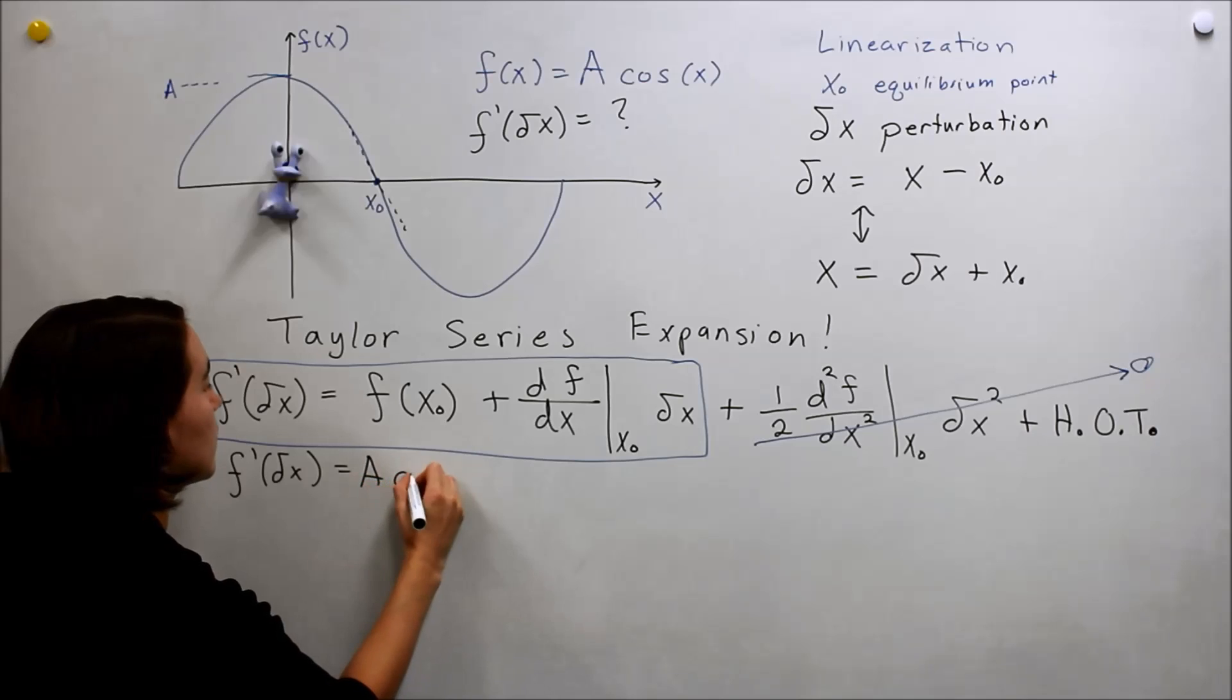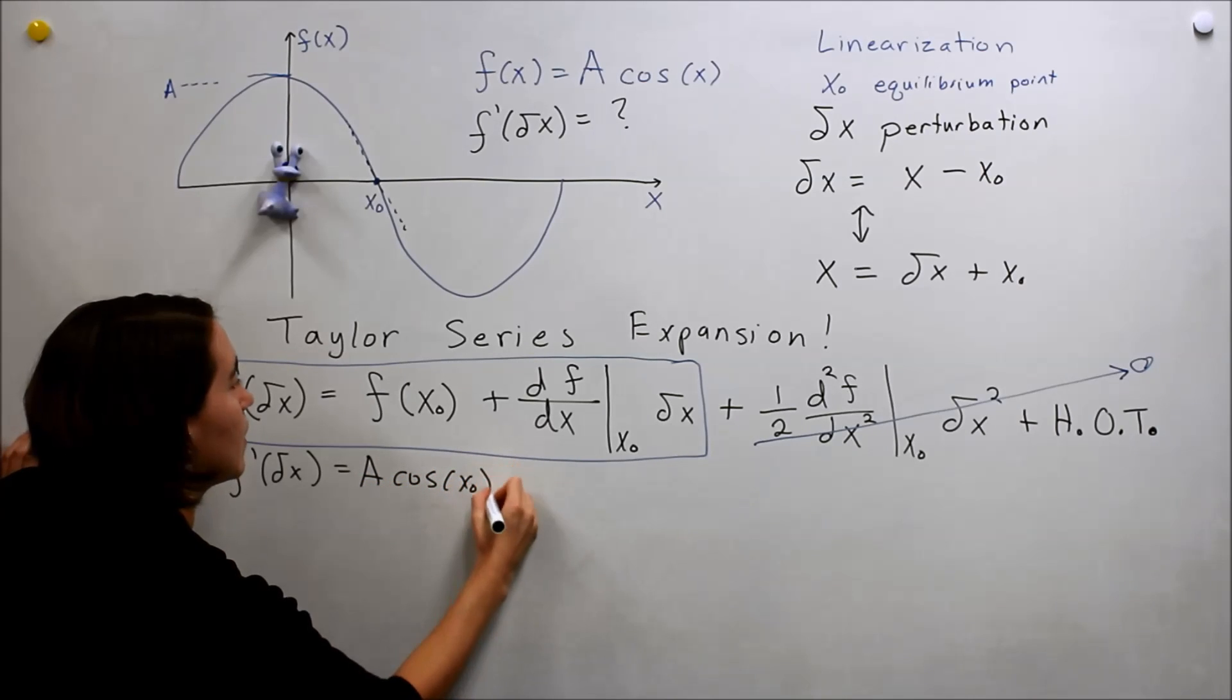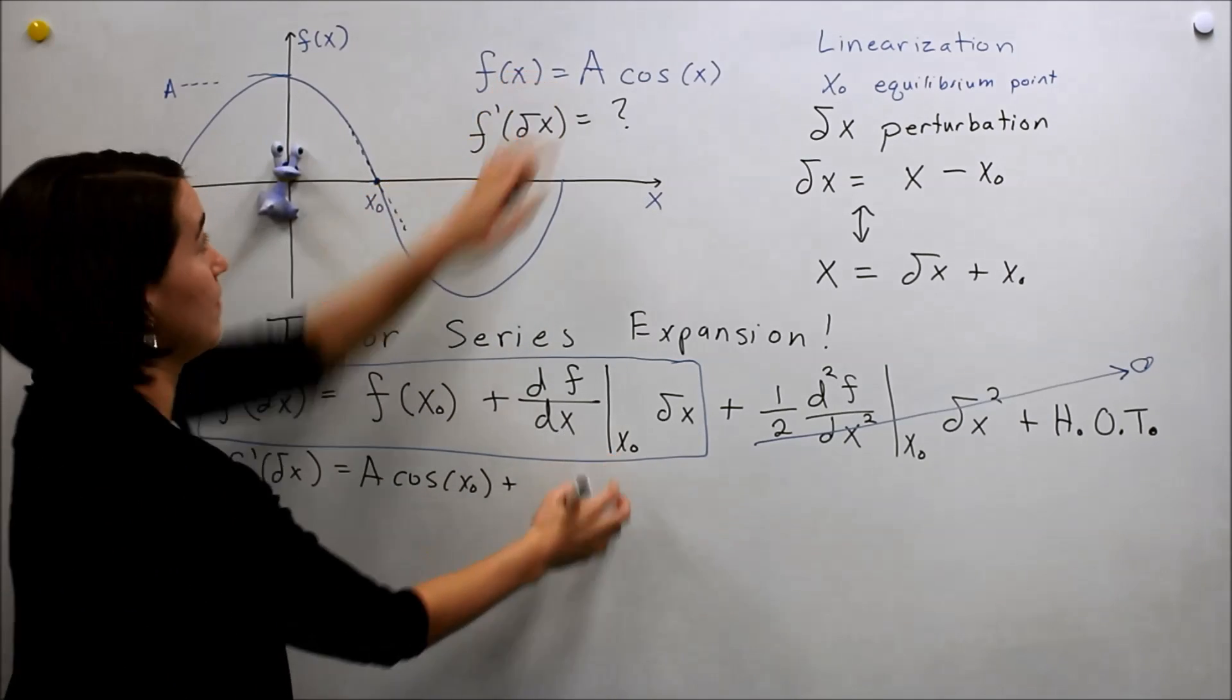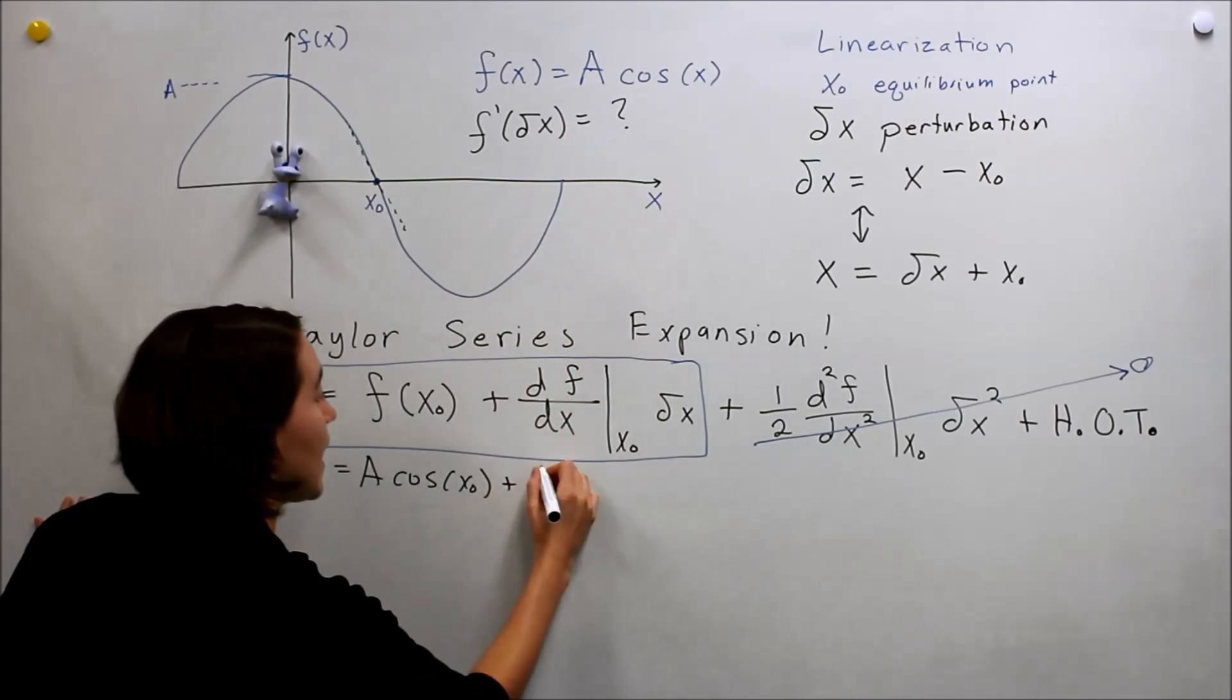so I'm going to write this all out. A cosine x₀ plus the derivative of our function evaluated at x₀. So derivative here is A goes to negative sine,